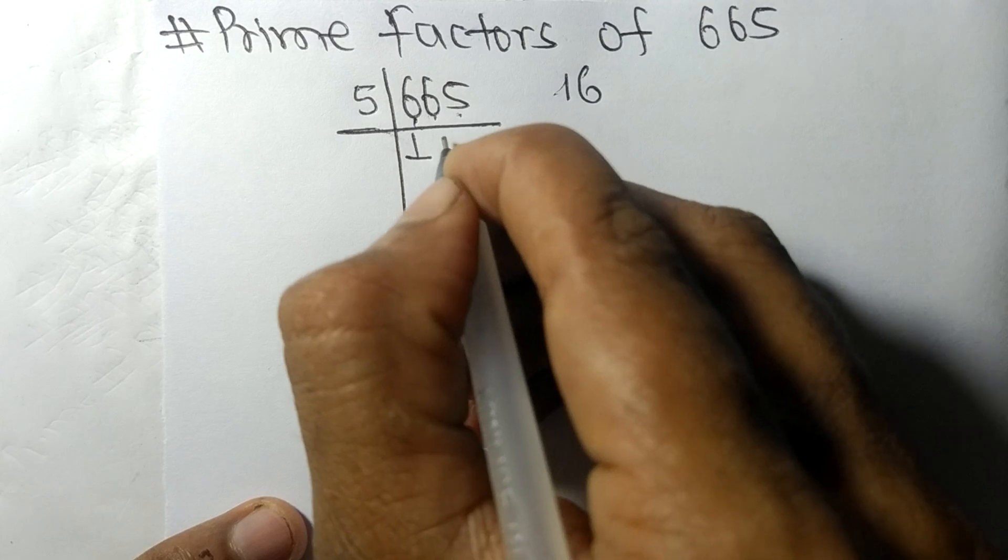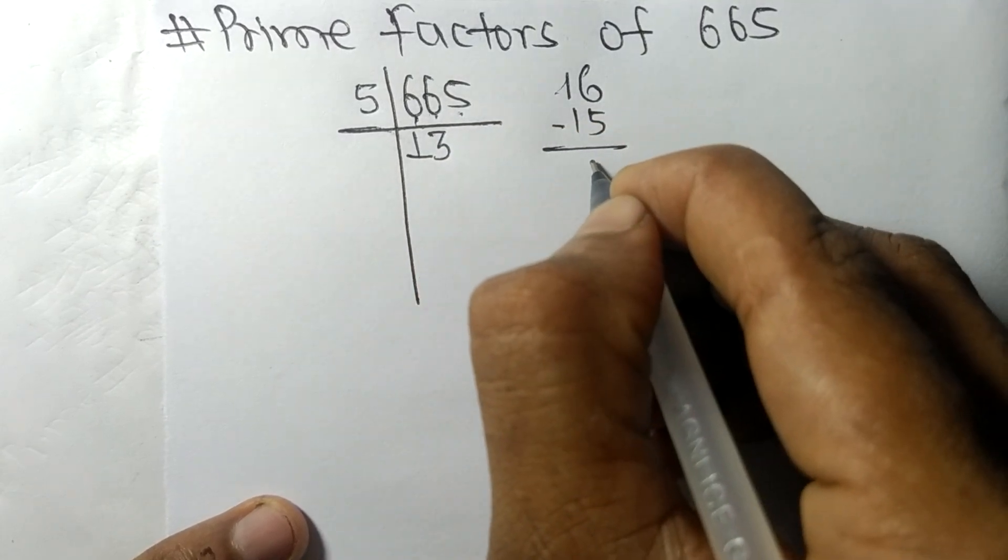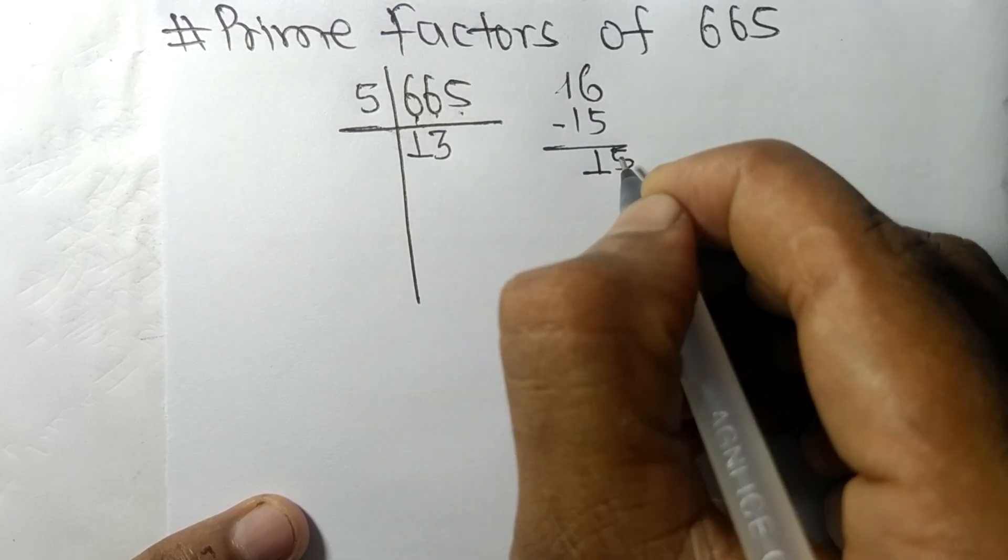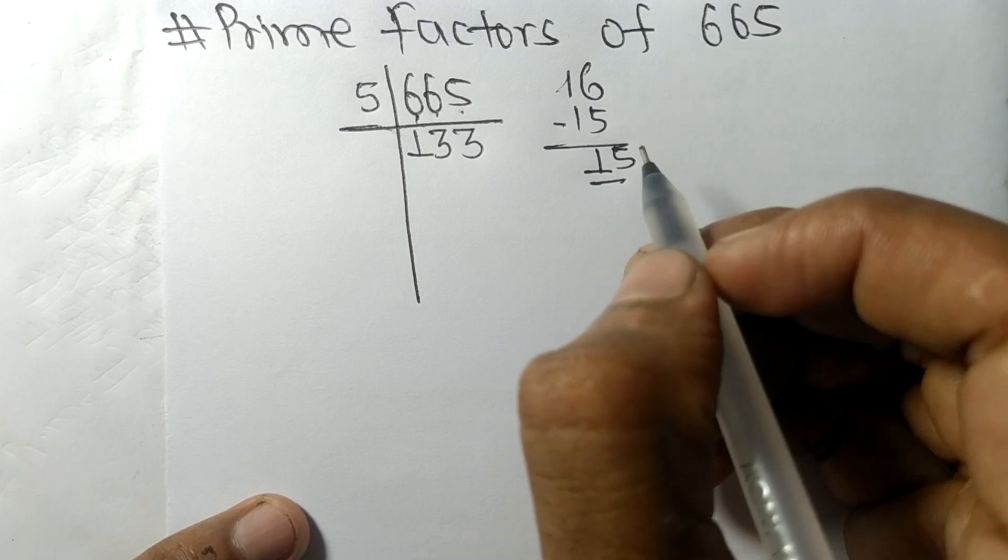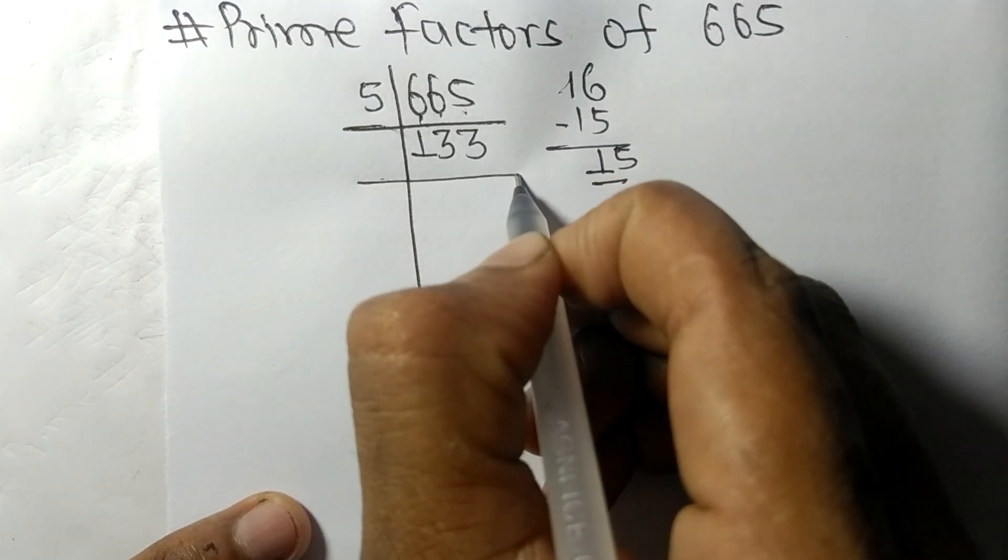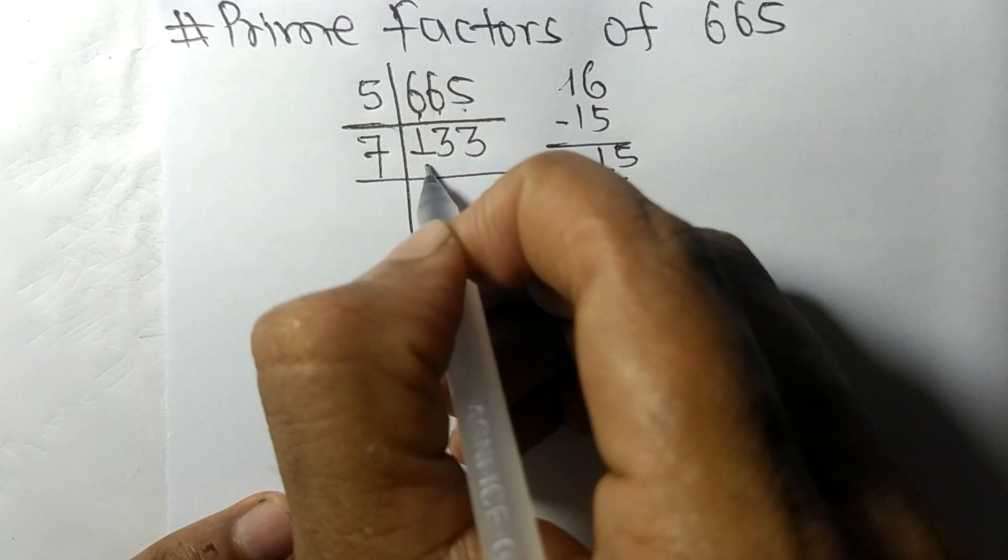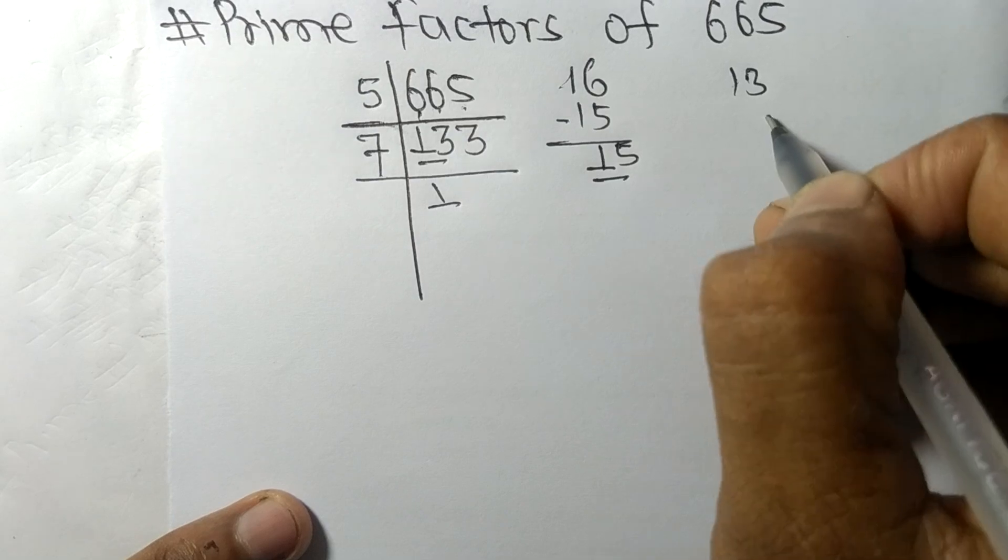16, 5 times 3 means 15, and we got here remainder 1, and this 5. 15, 5 times 3 means 15. So now we got 133 which is exactly divisible by 7. So we have 13, 7 times 1 means...